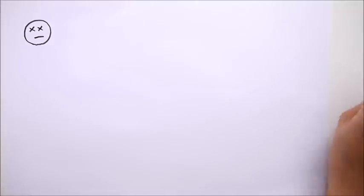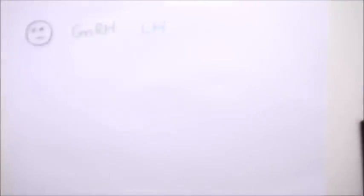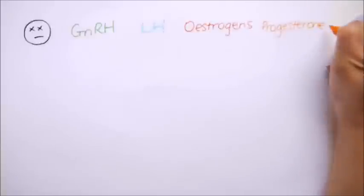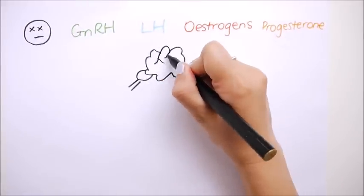But first, let's talk about the menstrual cycle. There are four key players in the monthly cycle: gonadotropin releasing hormone, luteinising hormone, progesterone and oestrogen. The cycle begins with menstruation when a layer from the endometrium is shed.